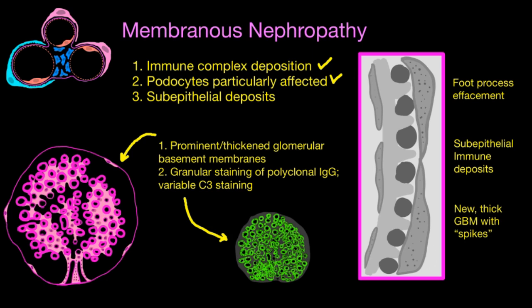If we looked closer on electron microscopy, we would see foot process effacement. The podocytes become injured, they lose their ultrastructure, and slit diaphragms disappear. Thus the patient has proteinuria, nephrotic syndrome, and all the rest of it.